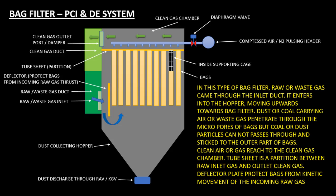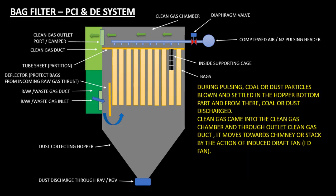The tube sheet is a partition between the raw inlet gas and the outlet clean gas. A deflector plate protects bags from the kinetic movement of incoming raw gas. During bag cleaning or pulsing, coal or dust particles are blown off and settle in the hopper bottom, from where the coal or dust is discharged.